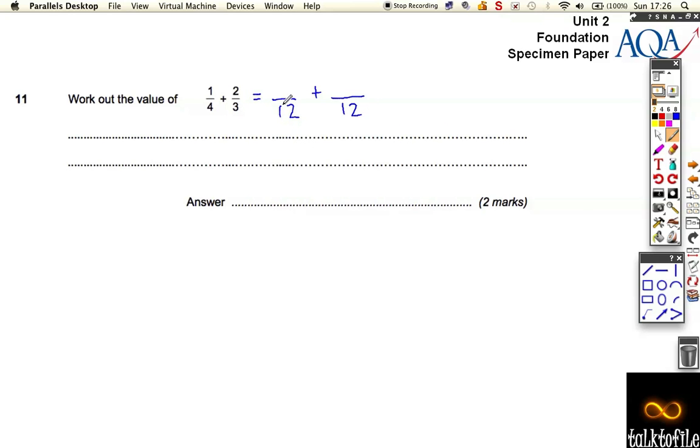So how did I get it from 4 to 12? Well I had to times it by 3. 4 times 3 is 12, so 1 times 3 is 3. So that first fraction, if it was out of 12, to keep it the same as a quarter would be 3 out of 12.